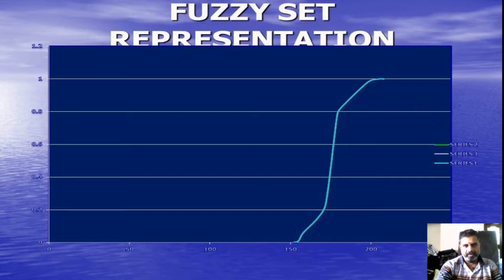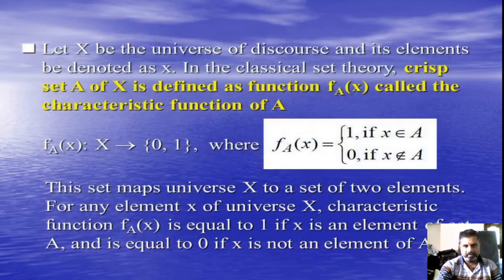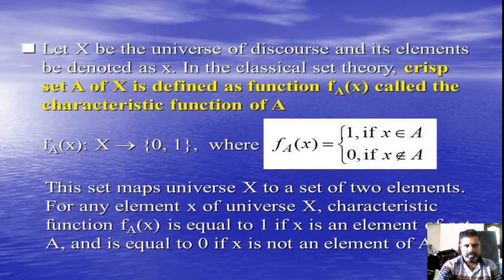This is the definition of a characteristic function. It assumes the value 1 if the element belongs to the set. It assumes the value 0 if the element does not belong to the set.